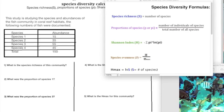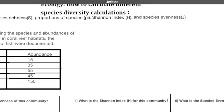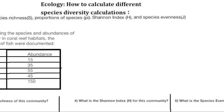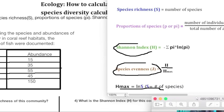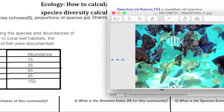So first off, what is species diversity? Species diversity is one element of the bigger concept of biodiversity. It is a mixture of different species present in a given ecological community, and it includes both species richness and species evenness. When measured, it's measured by the number of species and the proportion of each species in the community.